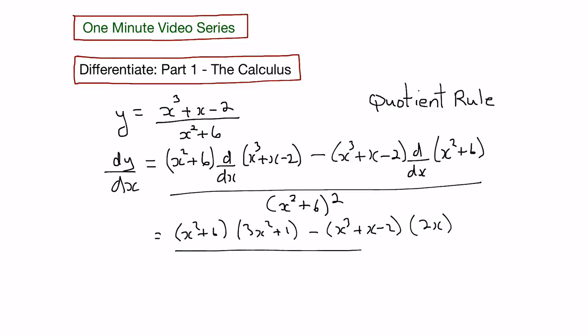all over x squared plus 6 squared. So that's the calculus part. Next we'll look at how to simplify this using algebra.